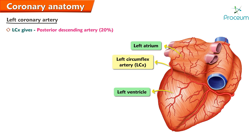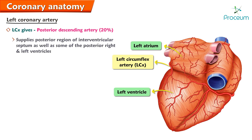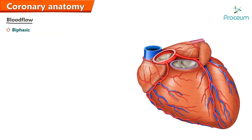In some people, about 20 percent, the left circumflex artery gives rise to the posterior descending artery, or PDA, which supplies the posterior region of the interventricular septum as well as some of the posterior segments of the right and left ventricles. This is termed left dominance.